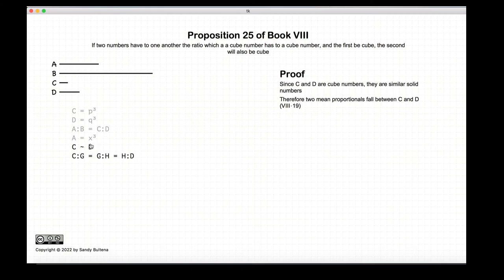Since C and D are both cube numbers and are similar, there exist two mean proportionals such that C to G is equal to G to H, which is equal to H to D. We know that from Proposition 19 of this book.